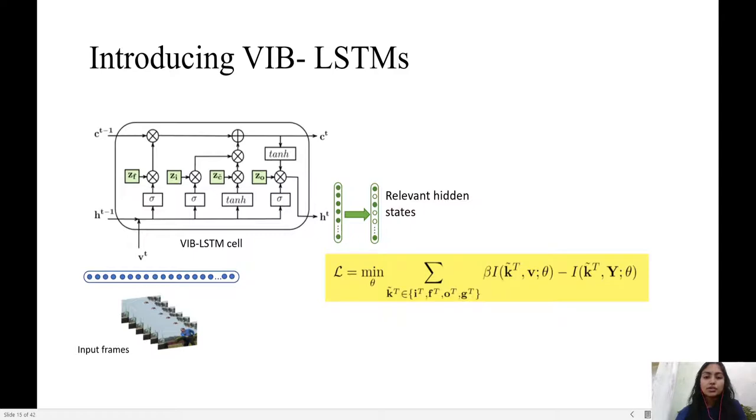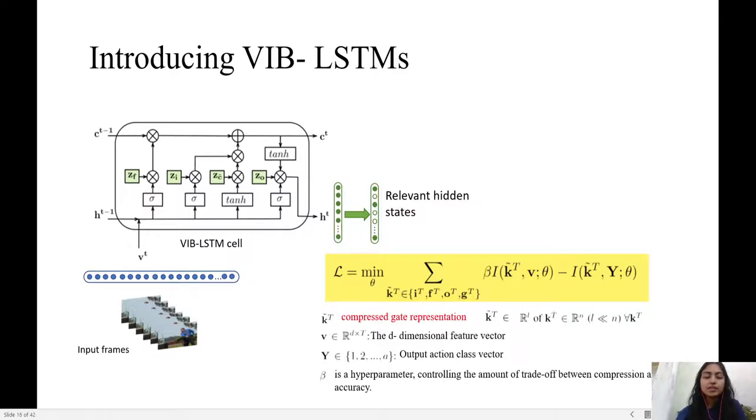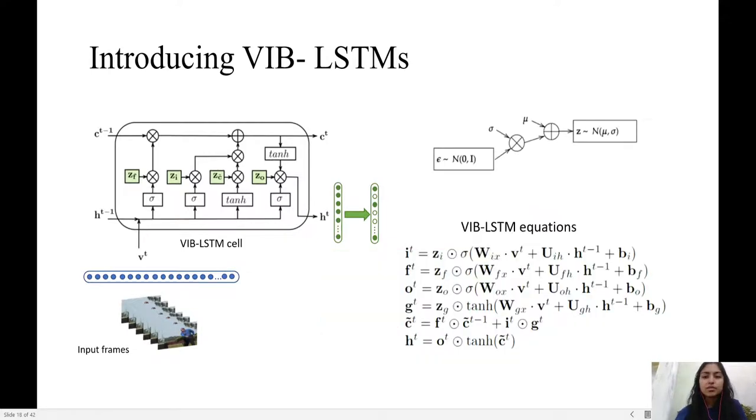The loss function is formulated as given, where K tilde refers to the compressed gate representation given the feature vector V and the class vector Y. Since this loss function is intractable, we invoke a variational upper bound which is minimized. The VIB LSTM equations are similar to the usual LSTM equations except that there is a Hadamard product with Z vectors whose values are sampled from Gaussian distributions with mean and variance learned from the data.